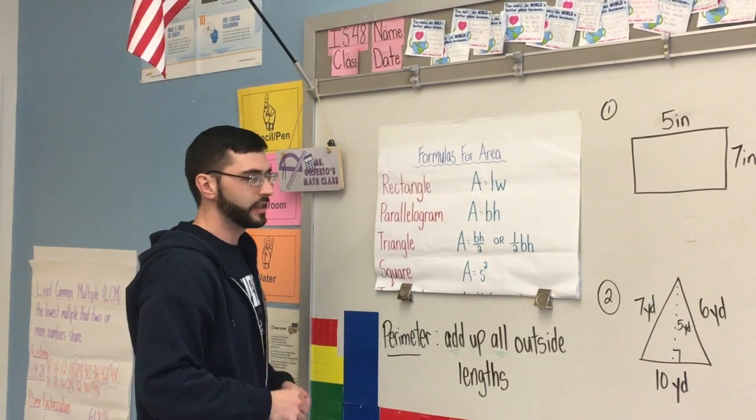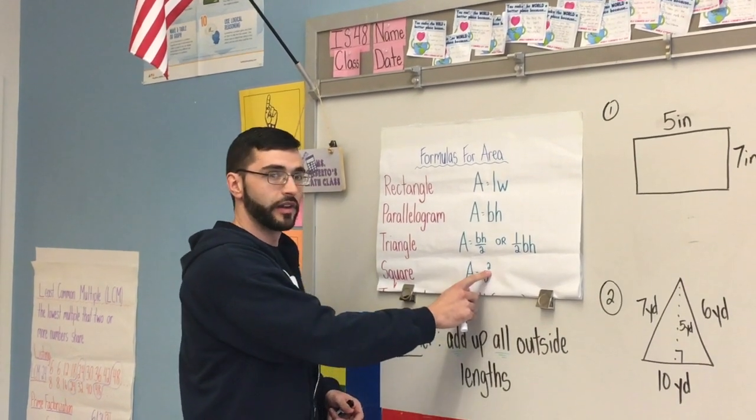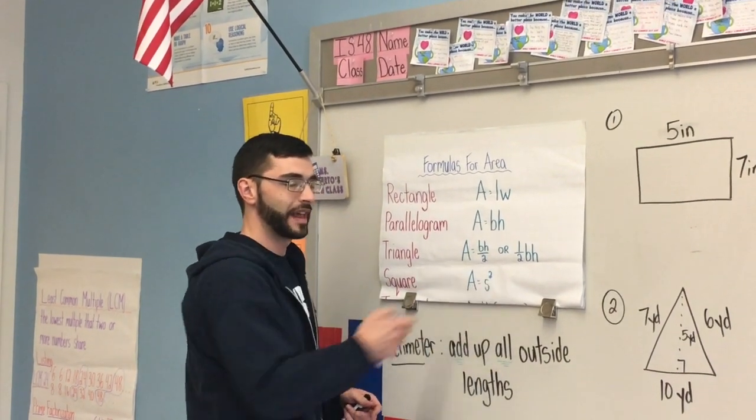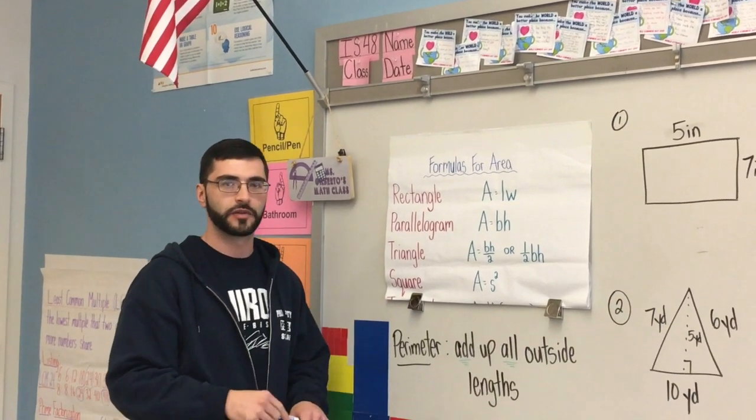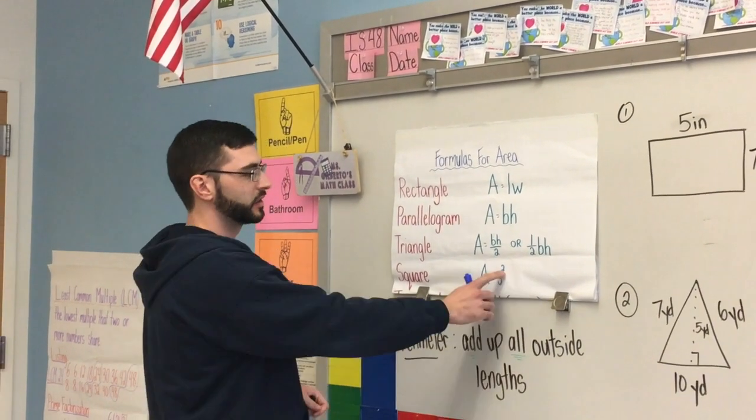And square, area equals side squared. So whatever that length is, you're multiplying it by itself. So if it's four, four times four. Two, two times two, because it's to the power of two.